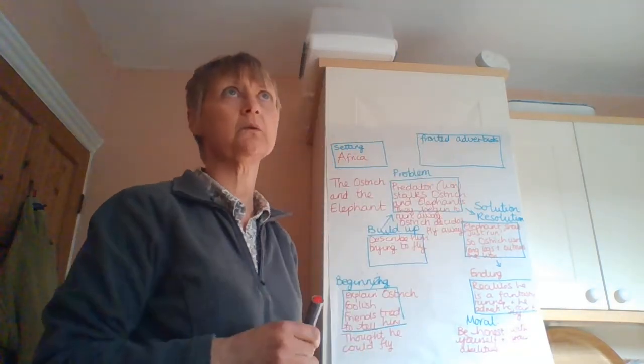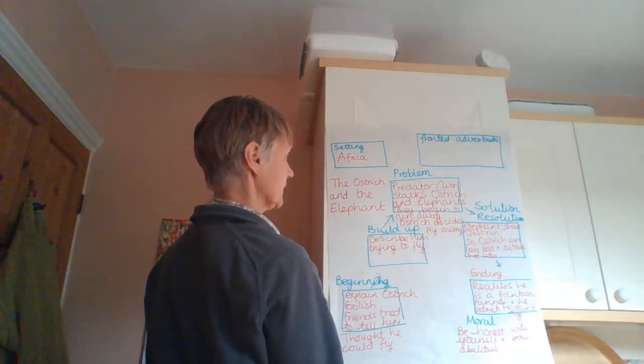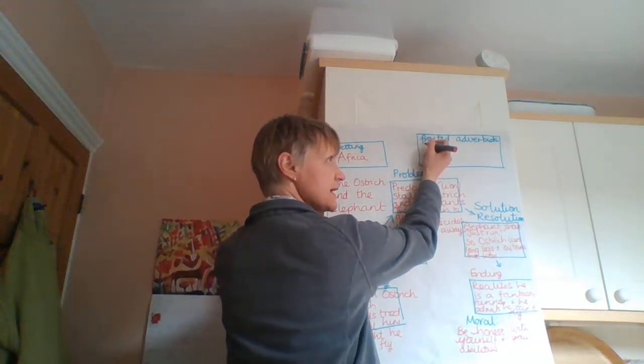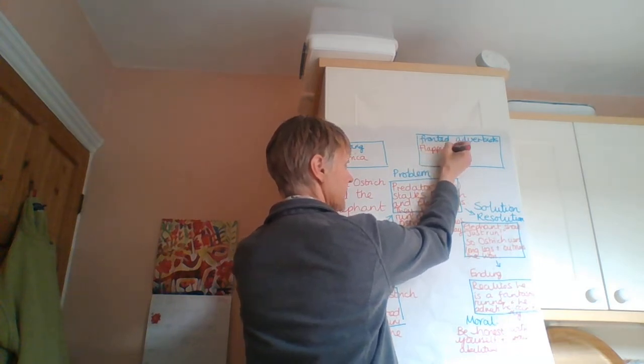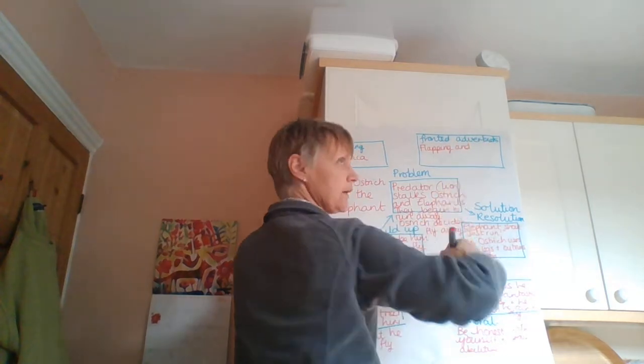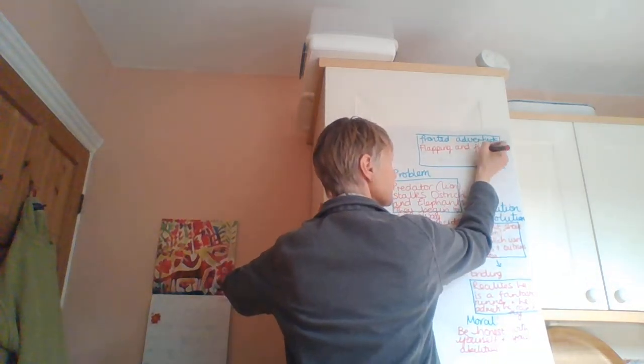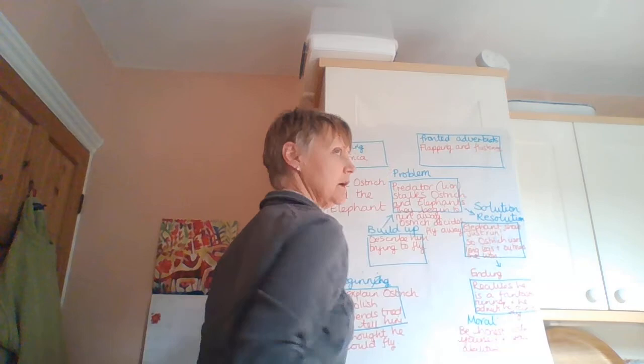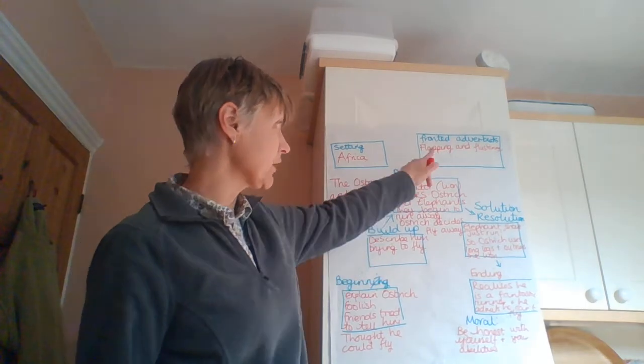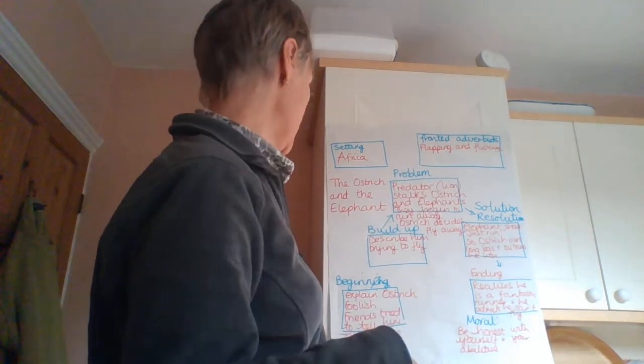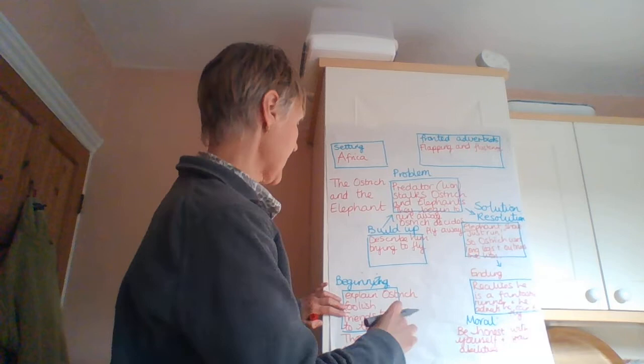Up here, I think fronted adverbials. So, I could have something like, to describe, I could say something like, flapping, flapping and, what else would we do? So, flapping and flustering, flapping and flustering, comma, the ostrich started to run. So, that could be, in that paragraph, I could start with a how fronted adverbial. I might have a time fronted adverbial.